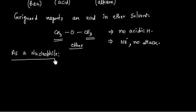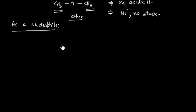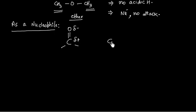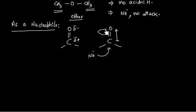Let us discuss the reaction of Grignard reagent as a nucleophile. If we have a carbonyl compound, oxygen is more electronegative, so it has a negative charge and carbon has some positive charge — this is a polar molecule. The C=O bond has a dipole moment, with oxygen having a negative charge and carbon having a positive charge.